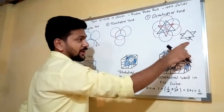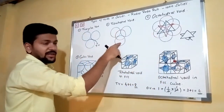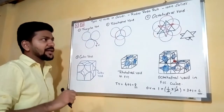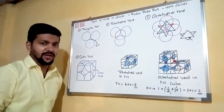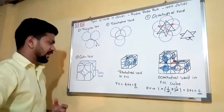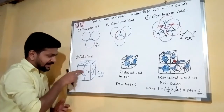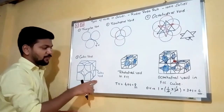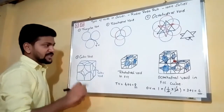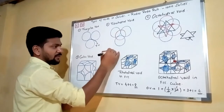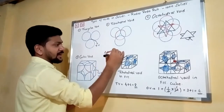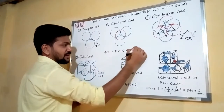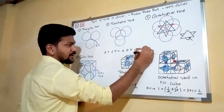Always remember: an octahedral void is greater than a tetrahedral void, and a tetrahedral void is always greater than a triangular void. The size series is: triangular void < tetrahedral void < octahedral void < cubic void, where the cubic void is the largest.